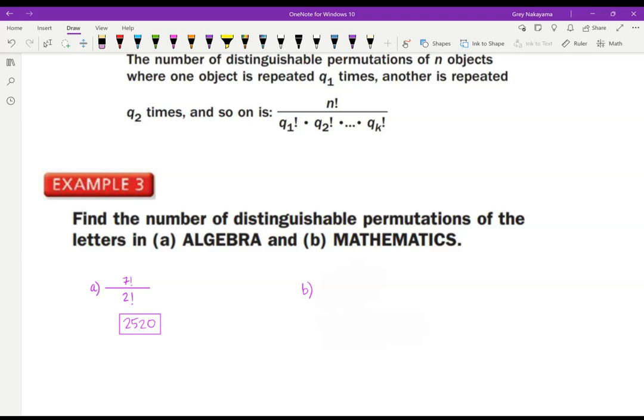Now MATHEMATICS, I got 11 letters, but I have two M's and I have two A's and I have two T's. So I divide by each one, however many I have, if I had three of something, it would be three factorial. So you put that in your calculator and you get 4,989,600.